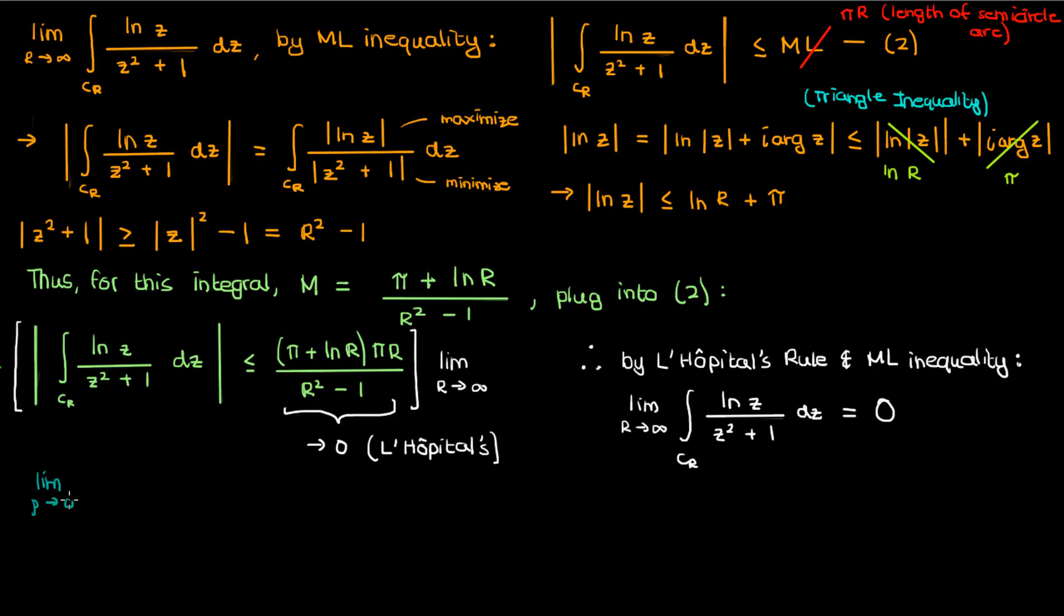Let's now determine the integral over the smaller semicircular arc C rho. Using the ML inequality, the magnitude of this integral again must be less than the maximum value on C rho of the function being integrated, times the length of C rho. By the same logic of the previous calculation, we can calculate the maximum possible value of the function on C rho to be the following.